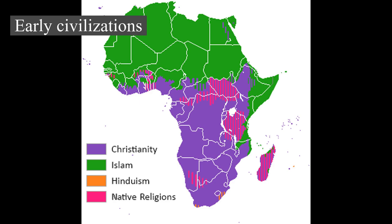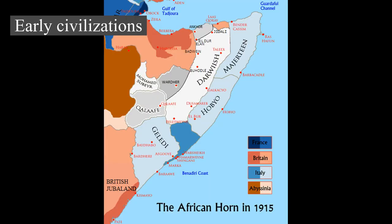Djenné-Djenno in present-day Mali was settled around 300 BC, and the town grew to house a sizable Iron Age population as evidenced by crowded cemeteries. Living structures were made of sun-dried mud. By 250 BC, Djenné-Djenno had become a large, thriving market town.